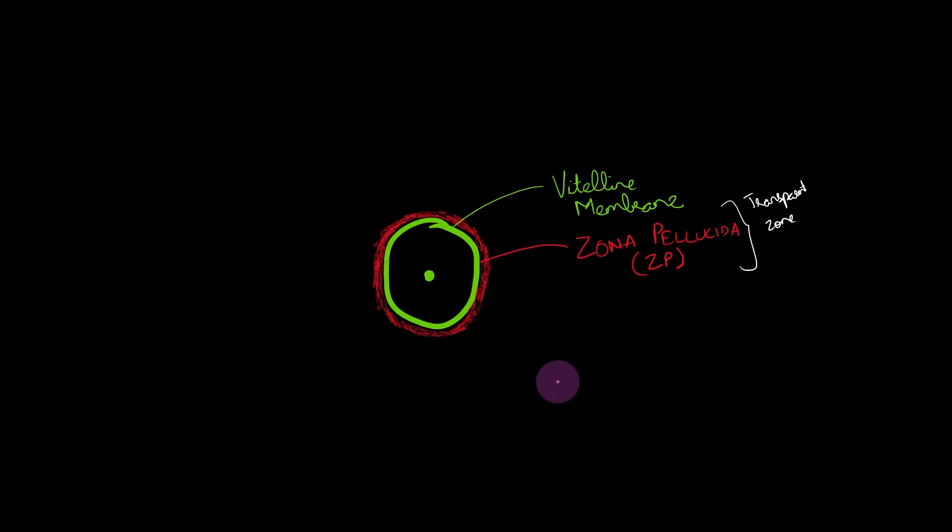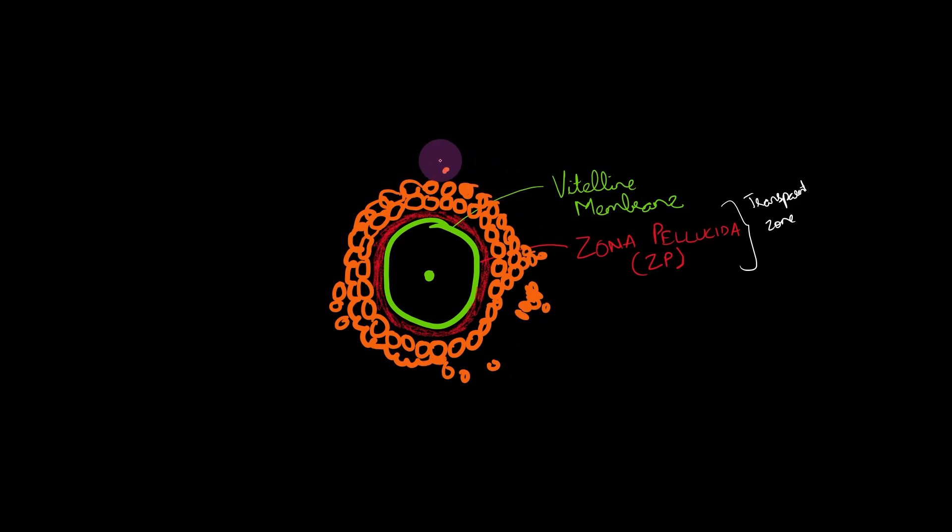And around the zona pellucida you have a cellular layer. A lot of cells are there and that is called as the corona radiata. Corona radiata is actually the same as the cumulus oophorus that you saw in the graafian follicle. You can refer to the graafian follicle video to understand more details about this structure.